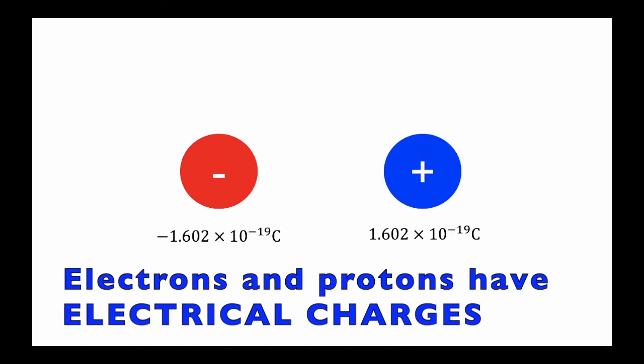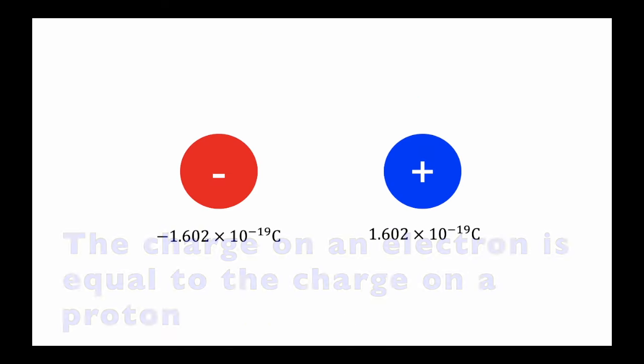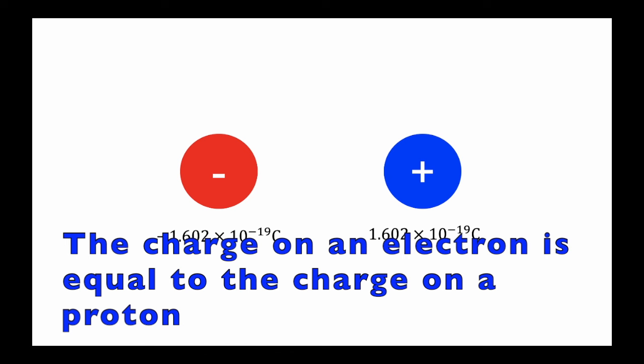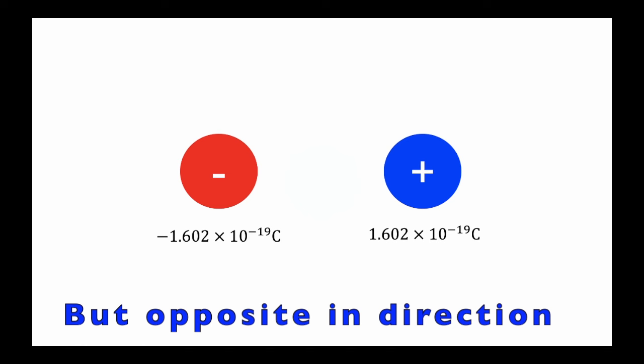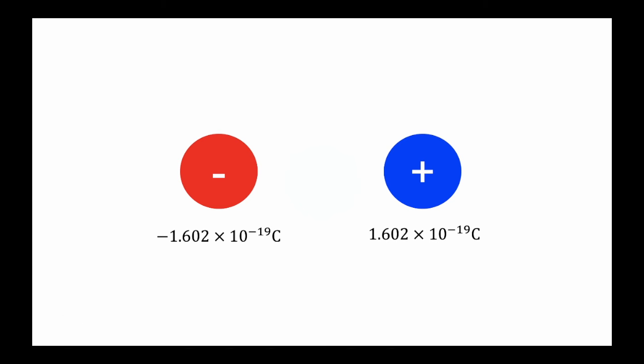Electrons and protons have electrical charges. The charge on an electron is equal to the charge on a proton, but opposite in direction.